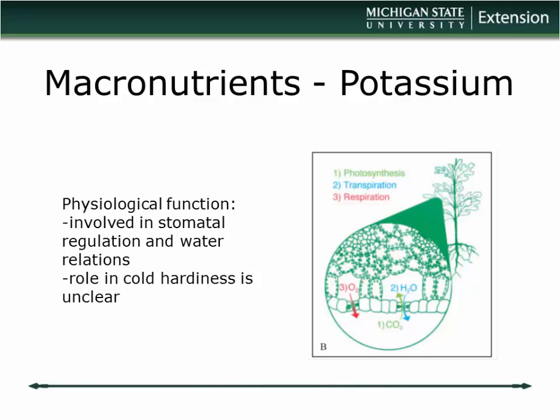We hear a lot about potassium and cold hardiness. Harold Pellet at the University of Minnesota compiled studies showing that potassium fertilization generally improved cold hardiness in ornamental plants, though occasionally other elements seem more important. We tend to rely on muriate of potash (KCl) for potassium fertilization, and it's often good to apply it in the fall so the plant gets potassium but the chloride is dissipated by winter snowmelt and spring rains.